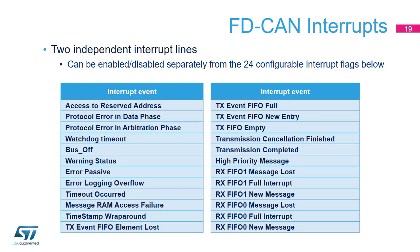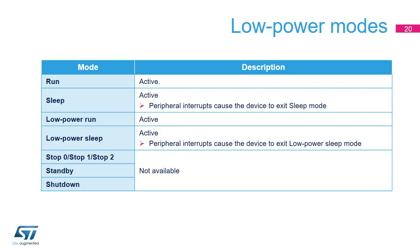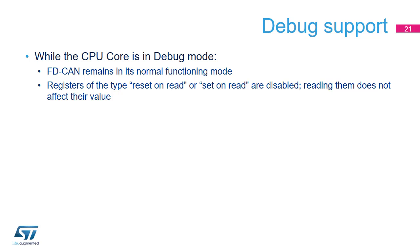An FDCAN controller peripheral provides two independent interrupt lines. This slide shows the complete list of possible interrupt events. Here is an overview of the FDCAN subsystem low-power configuration modes. The device is not able to perform any communications in stop or standby modes; it is important to ensure that all CAN traffic is completed before the peripheral enters stop or standby modes. While the CPU core is in debug mode, i.e. stopped at a breakpoint, FDCAN remains in its normal functioning mode. In particular, reception continues as normal and this may lead to reception overrun errors when FIFOs or buffers are full. Registers of the type reset-on-read or set-on-read are disabled; reading them does not affect their value.